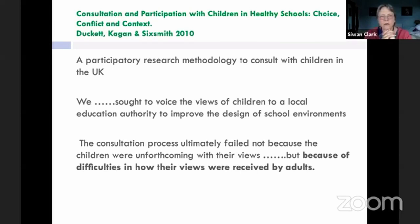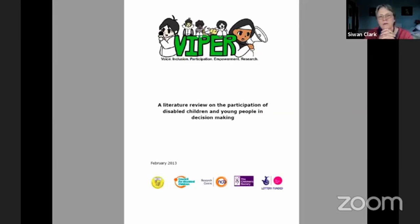Another paper from 2010 was a good consultation with a lot of children looking at how to make school environments better. It failed not because the children didn't come up with good ideas, but because of difficulties in how their views were received by the adults around them. And a literature review published in 2013 looked at participation of disabled children and found that if you were a disabled child, you were much less likely to be involved in participatory exercises. If you were a black disabled child, you were even less likely — a good example of multiple oppressions meaning that some of the most vulnerable children have no say at all.